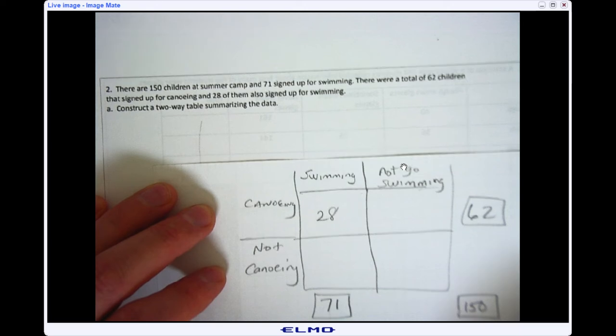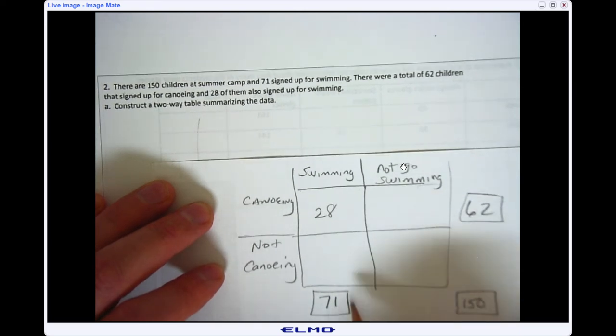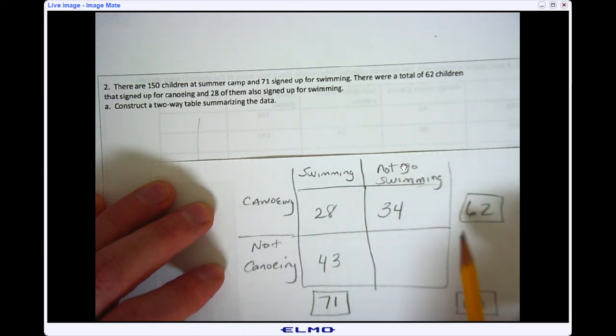And then from these four spots, I can fill out the rest of my two-way table. So I have to ask myself, 28 plus what is 62? That would have to be 34. If I add 28 plus 43, I'm going to get 71 total swimmers. And then I can also find out this missing value here, because 62 plus something has to equal 150, and that ends up being 88.